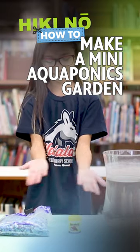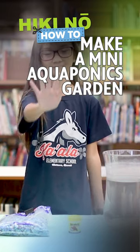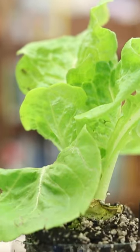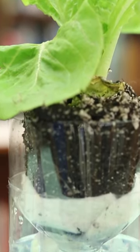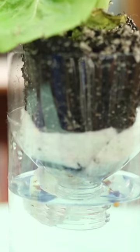Today we will be making our own mini aquaponics garden in five simple steps. Aquaponics is the growing of fish and plants in one system where we feed the fish, the fish poop helps feed the plants, and the plant roots help clean the water for the fish.